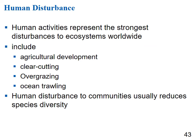Human activities represent the strongest disturbance in ecosystems worldwide, including agricultural development, clear-cutting, overgrazing, and ocean trawling — and these usually reduce species diversity. To solve habitat destruction problems, you need to involve people in the community and get their buy-in. It's more complicated than simply blaming those who overgraze.